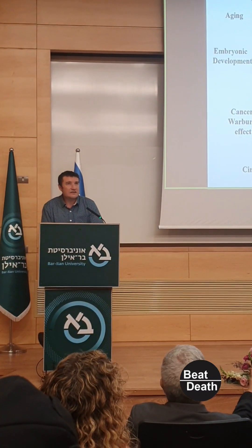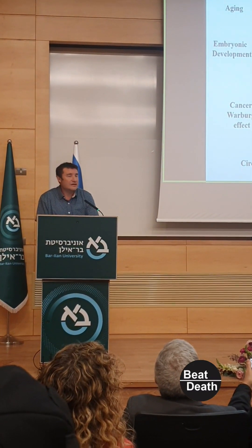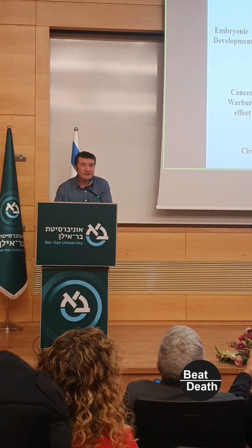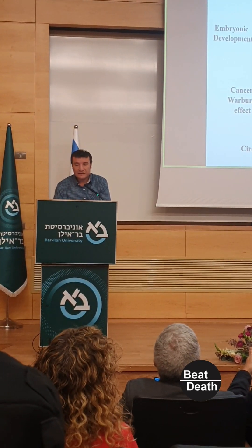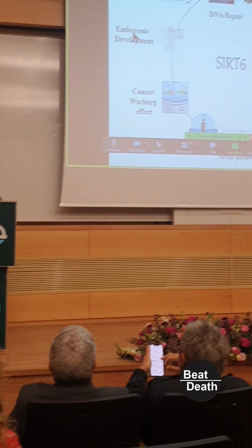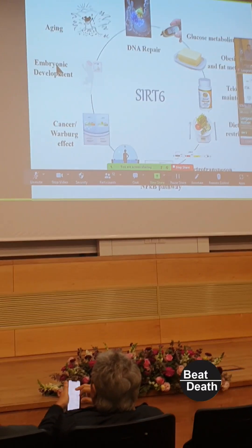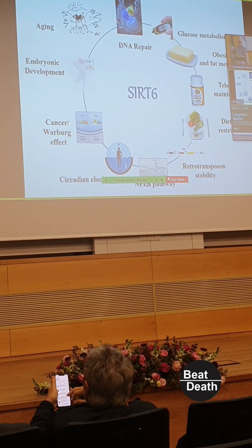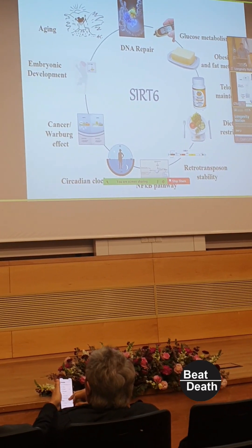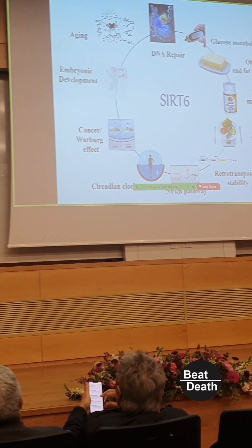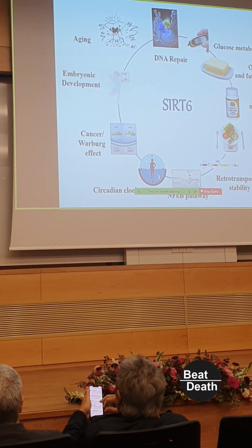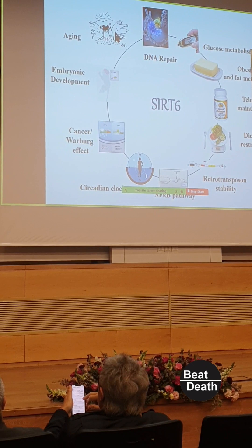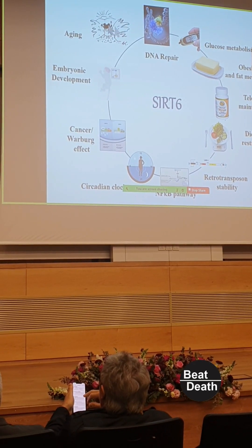SIRT6 is involved in dietary restriction. We showed that under dietary or caloric restriction that extends lifespan, the level of SIRT6 increases. It's also involved in maintaining telomere length, preventing inflammation, and in embryonic development. If you have a homozygous mutation for SIRT6, it's embryonic lethal in humans. In monkeys, you die two hours after birth. In mice, when you don't have SIRT6, you develop a premature aging phenotype and die very early, after about four weeks. Today I'm going to show you evidence about the roles of SIRT6 in aging.